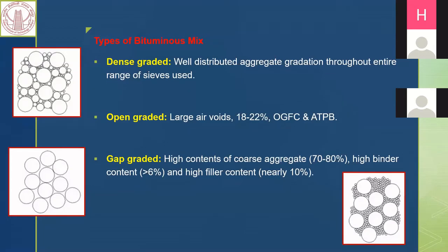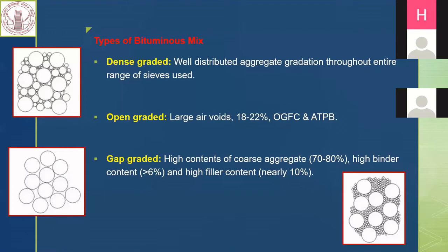Dense graded is the most popularly used bituminous mix. In dense graded mixes, we have a well-distributed aggregate gradation throughout the entire range of sizes — from bigger sizes to smaller sizes to fines. As shown in the figure, circles denote aggregate sizes. In these mixes, air voids are very less, which is why they are preferred for national highways, state highways, and all important roads.